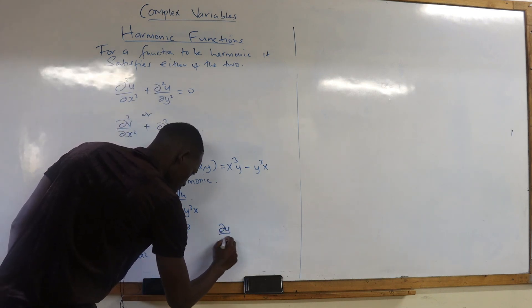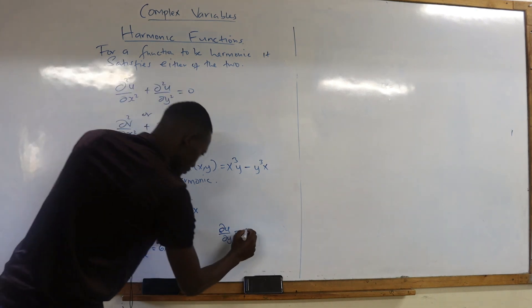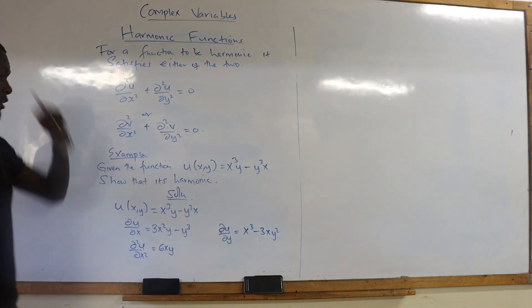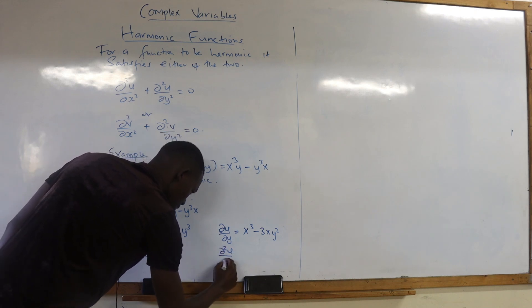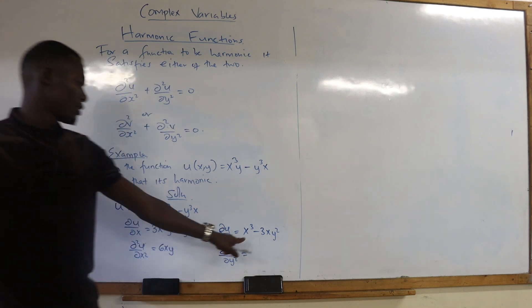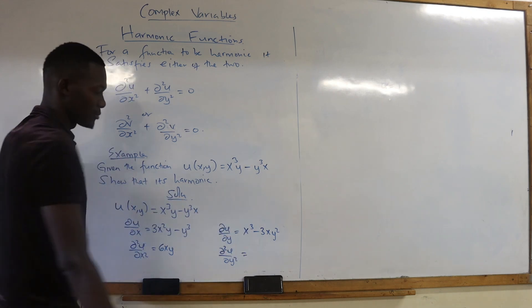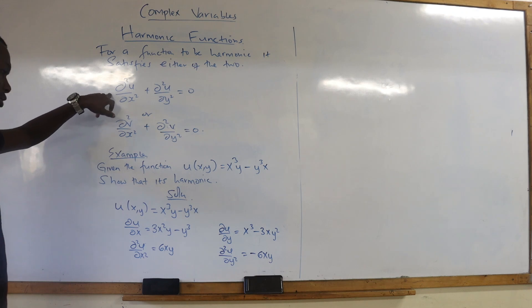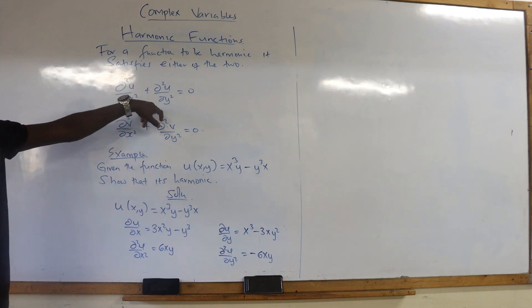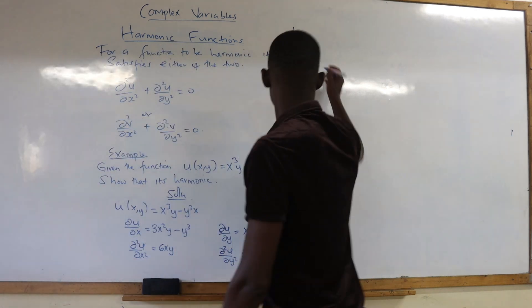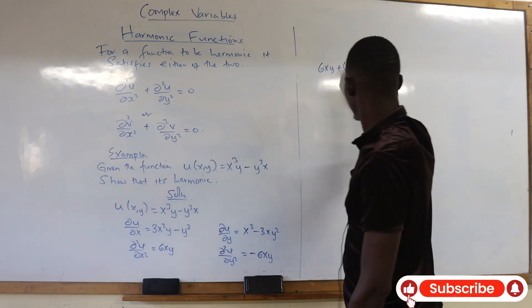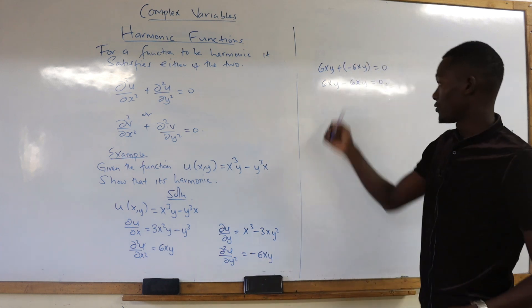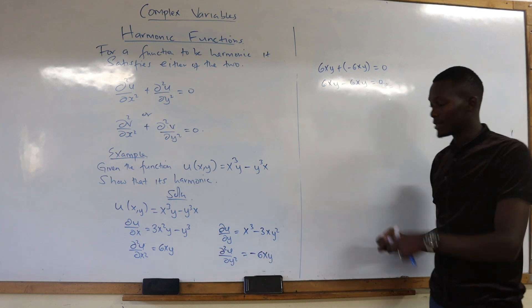Now du/dy — differentiate the function with respect to y. We shall have x cubed minus 3y squared. Then d²u/dy²: differentiate again with respect to y. There is no y variable in the first term, so that becomes zero. The second term gives us negative 6xy. For our condition to be fulfilled, when you take the second derivative with respect to x and add the second derivative with respect to y, the answer will always be zero.